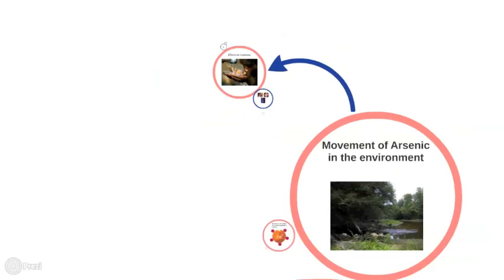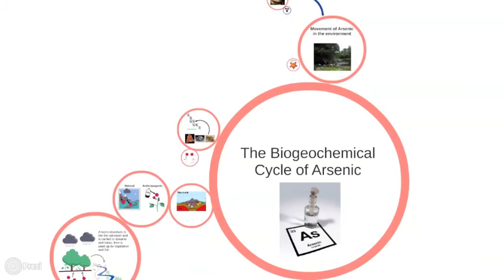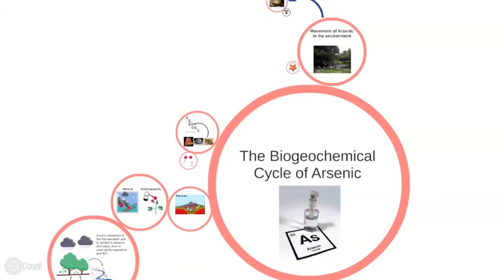As we have seen, arsenic is removed from rocks and becomes mobilized in water bodies. Human populations which then drink from these contaminated waters develop debilitating diseases.